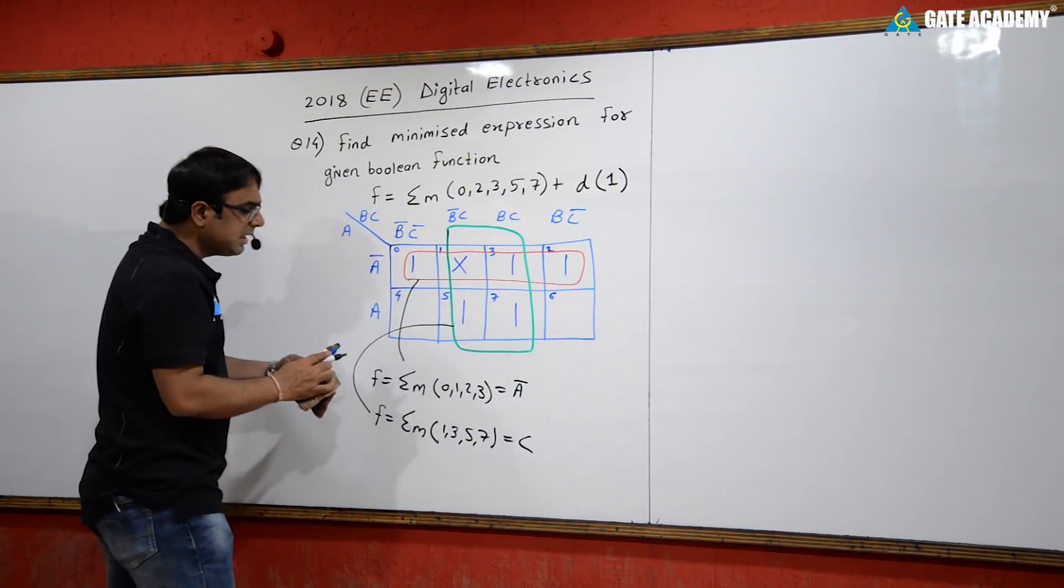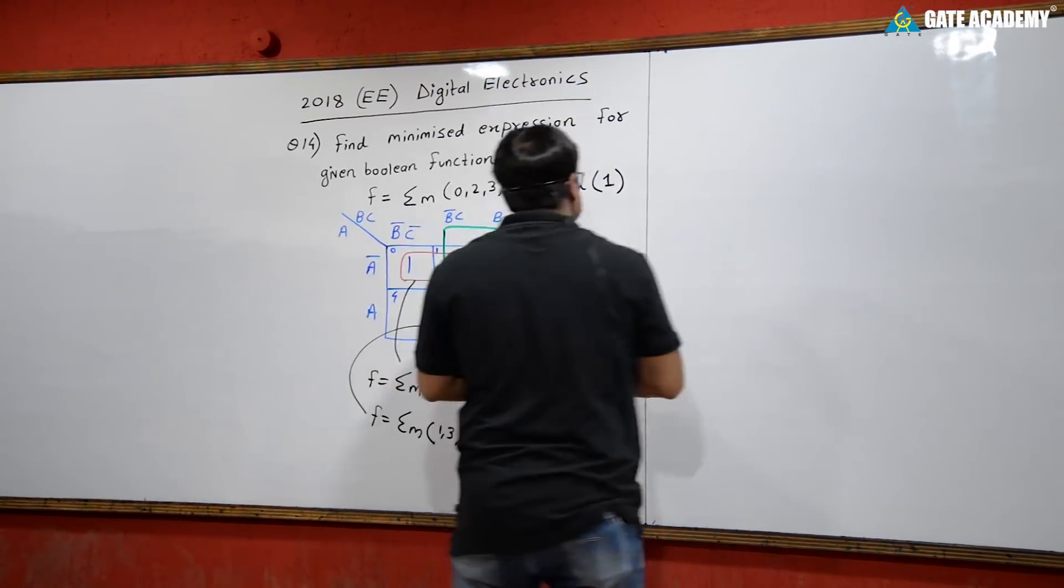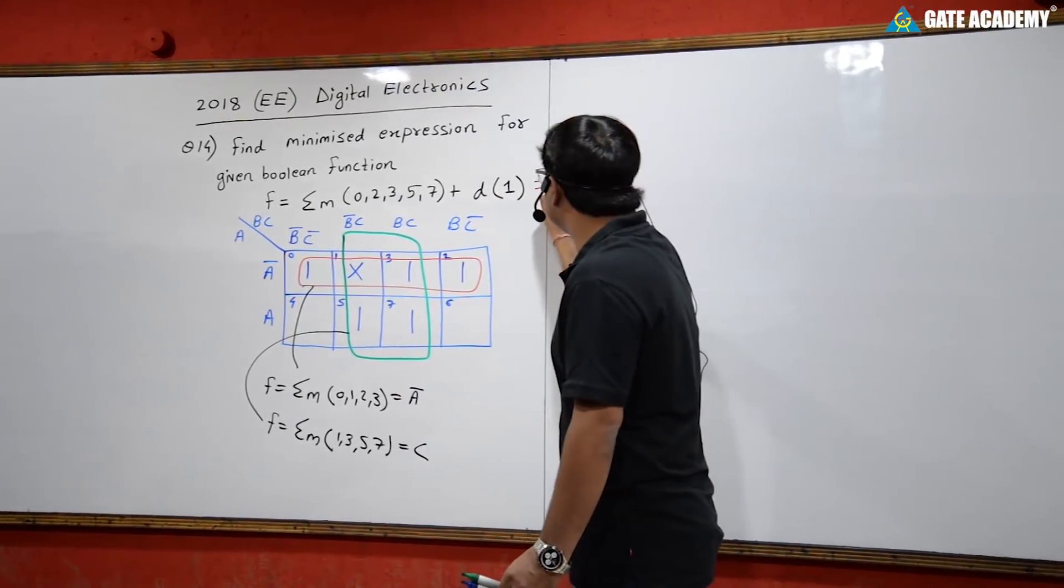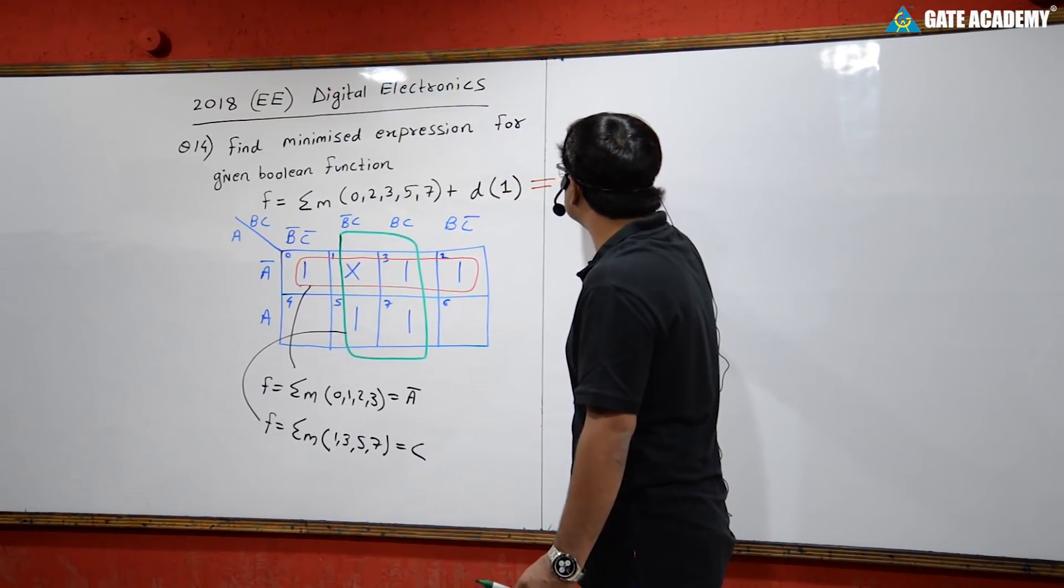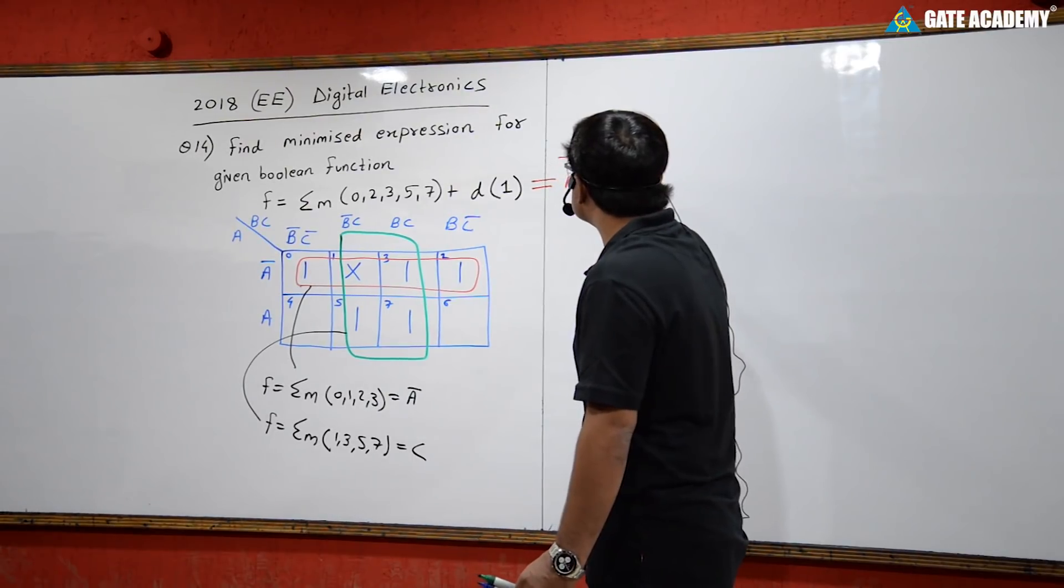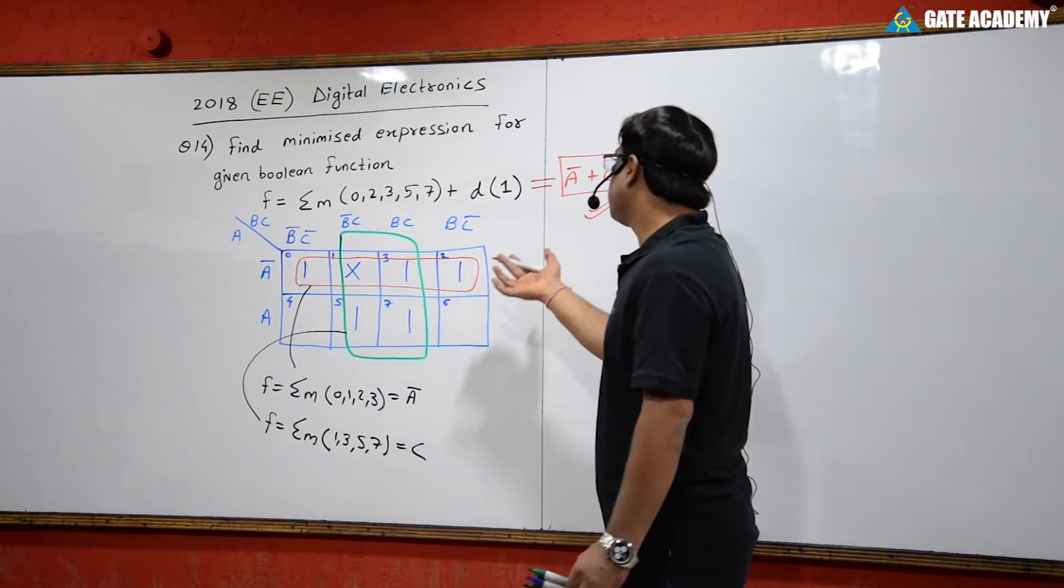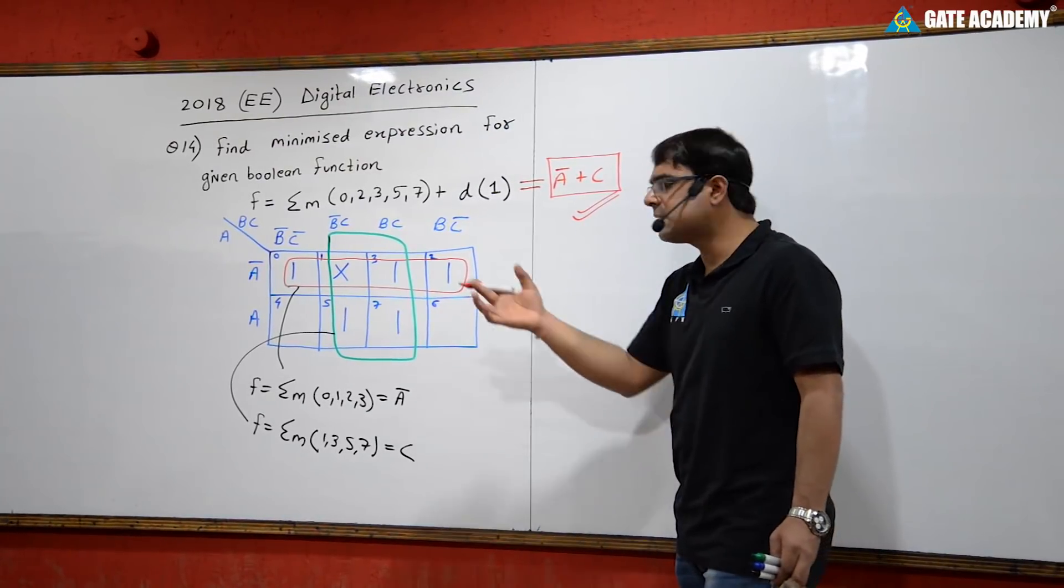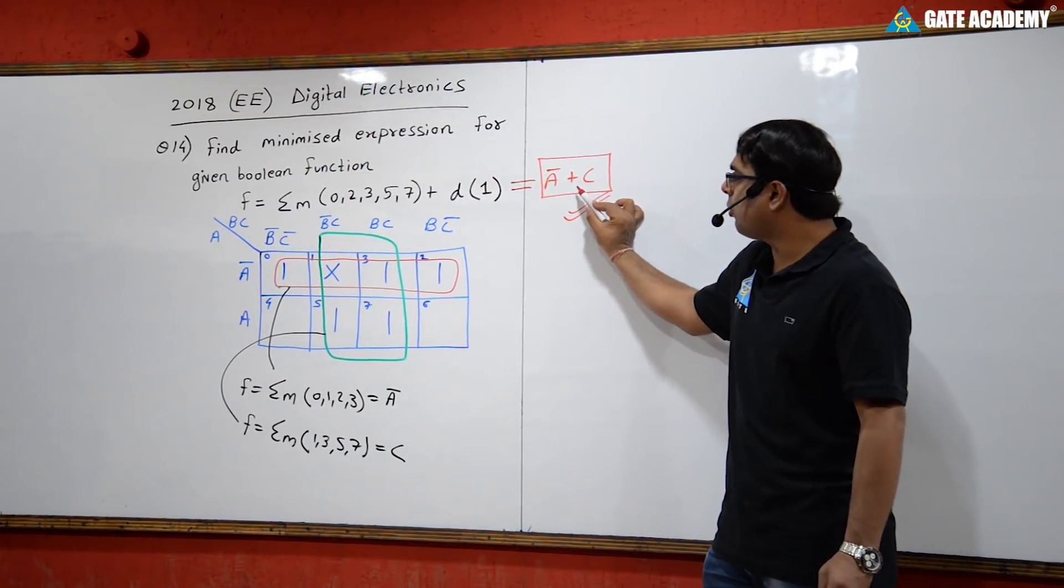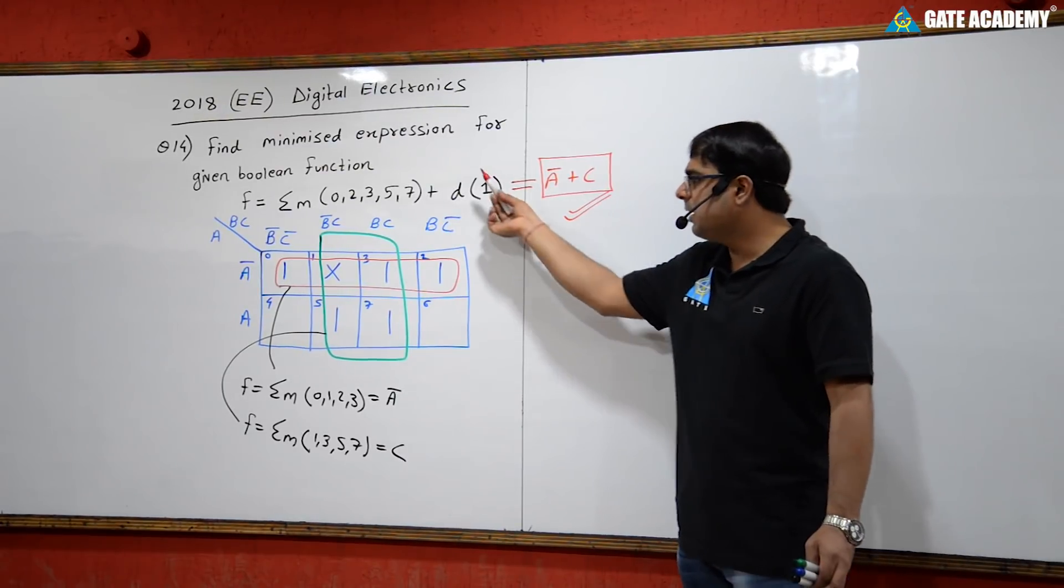So this equals c. The answer has one term as a complement and the other as c. The final answer is a complement plus c, which was the correct option among the choices given.